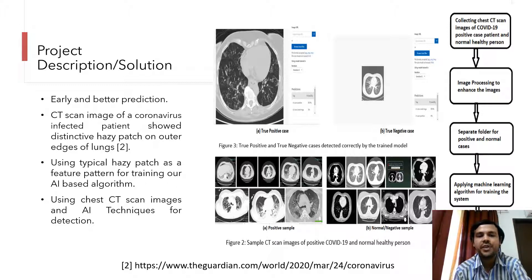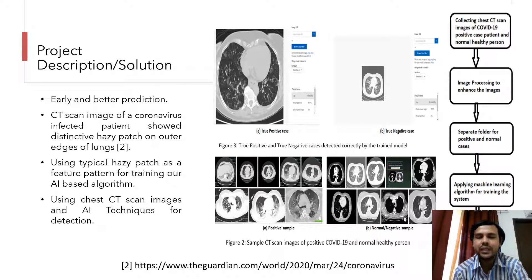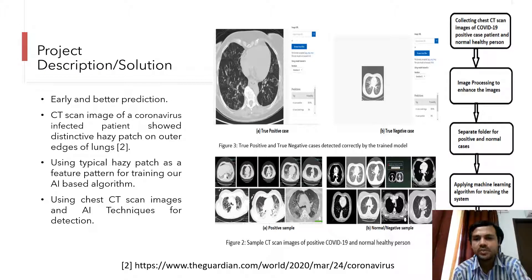We are collecting chest CT scan images of COVID-19 positive patients as well as normal healthy patients. We then apply image processing techniques to enhance the images, and we feed both positive and normal samples for our system to train on. Once the system is trained, we test our model on images which the system has never seen before.